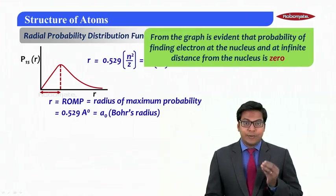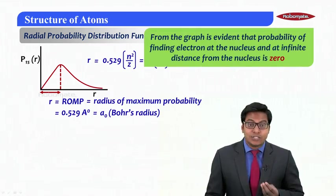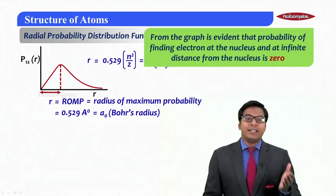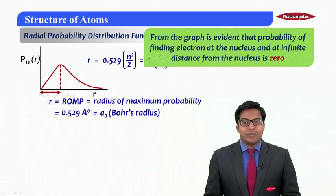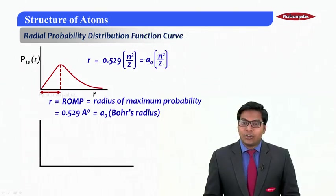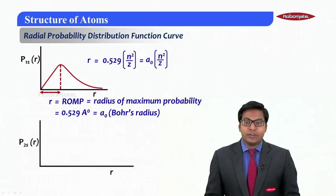From the graph it is evident that the probability of finding electrons at nucleus and at infinite distance from the nucleus is always zero. Now let me draw a similar graph for 2s.